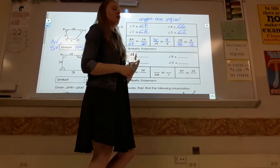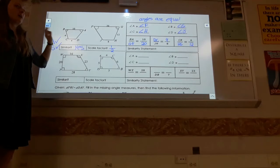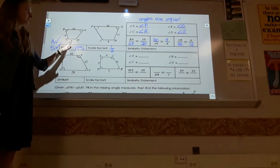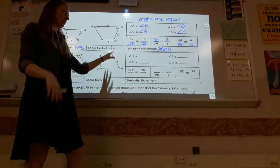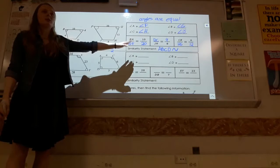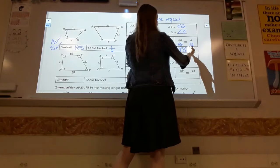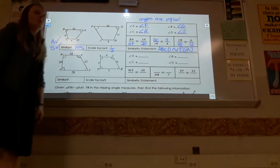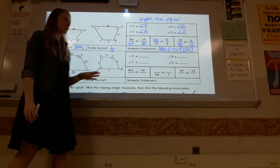To write the similarity statement, name the first shape in any order — for example ABCD — then use the similarity squiggle symbol, then name the second shape in the corresponding order: FGHJ. The only difference from congruent shapes is that sides aren't equal — they're in some proportional relationship like one-half or two-thirds.